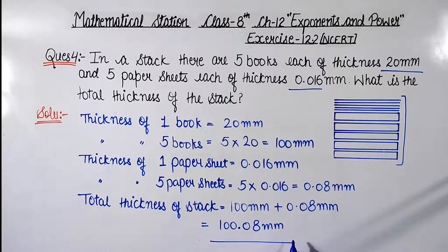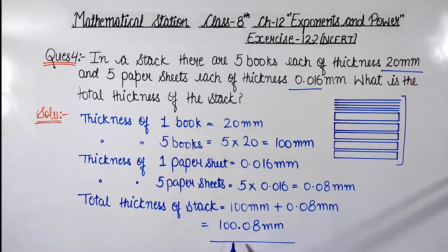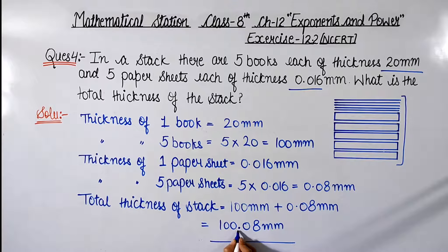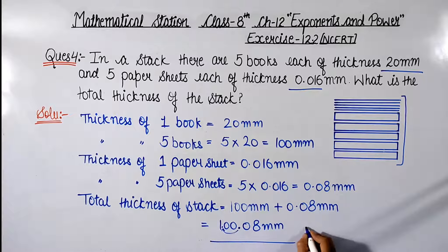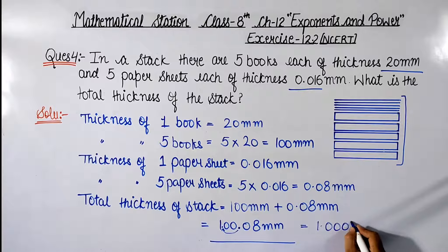Now, because our exercise is related to standard form, we will change this number into standard form. We have to leave one digit on the left of the decimal point, so we will move this point. This gives us 1.0008.